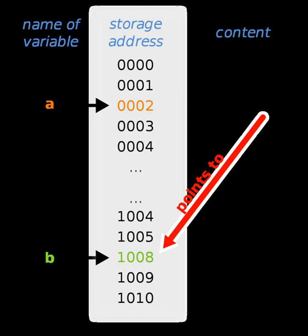While powerful, pointer arithmetic can be a source of computer bugs. It tends to confuse novice programmers, forcing them into different contexts — an expression can be an ordinary arithmetic one or a pointer arithmetic one, and sometimes it is easy to mistake one for the other. In response to this, many modern high-level computer languages do not permit direct access to memory using addresses. Also, the Safe-C dialect Cyclone addresses many of the issues with pointers.